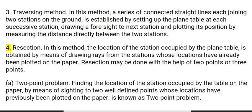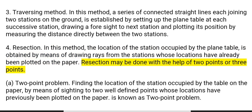4. Resection: In this method, the location of the station occupied by the plane table is obtained by means of drawing rays from the stations whose locations have already been plotted on the paper. Resection may be done with the help of two points or three points.